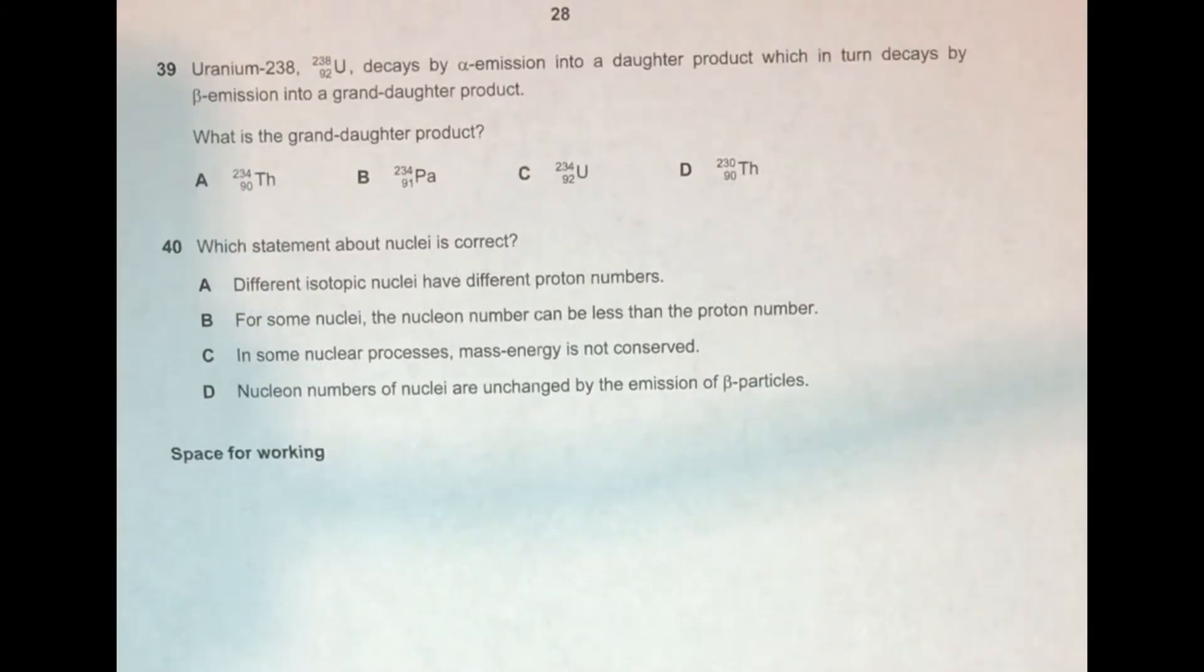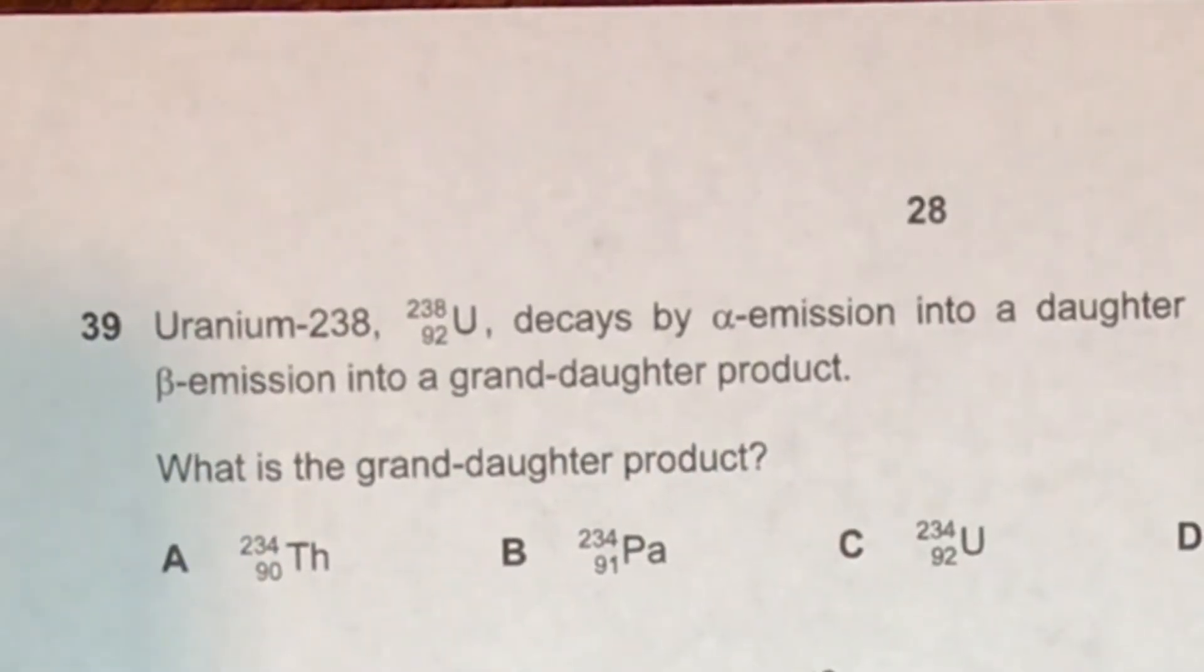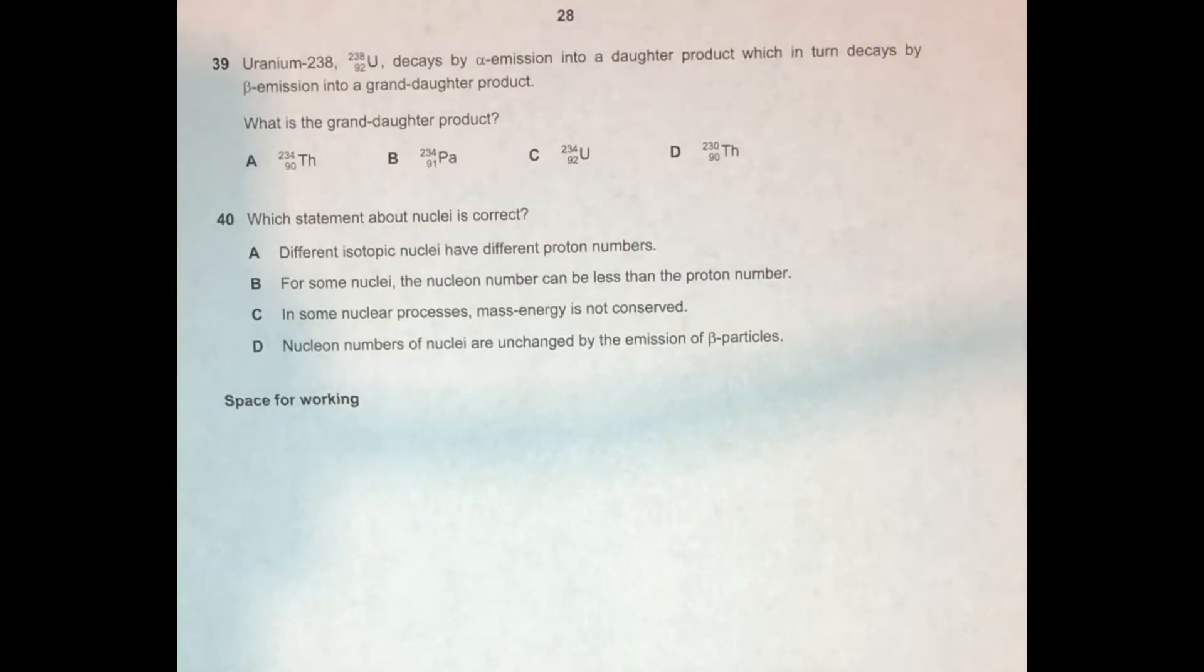It reads: Uranium-238, and then it gives us that nuclide symbol there for Uranium-238, which shows us that there's 92 protons and 238 total nucleons, decays by alpha emission into a daughter product, which in turn decays by beta emission into a granddaughter product. What is the granddaughter product?